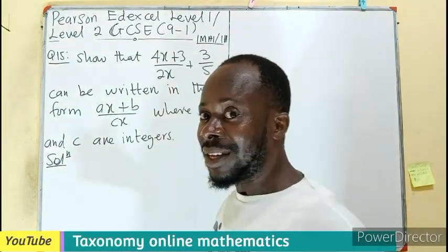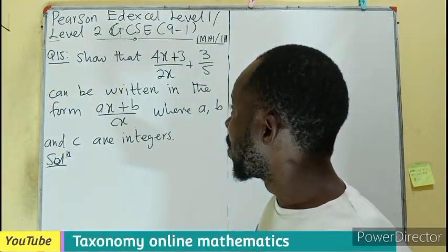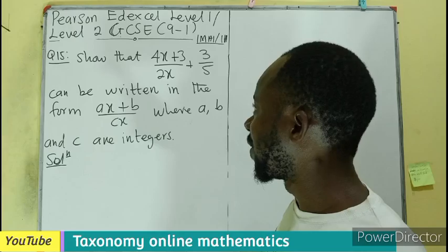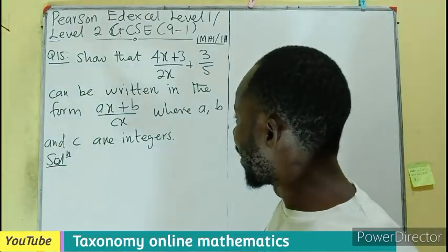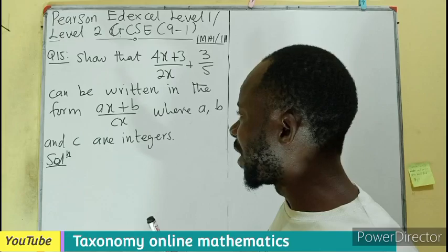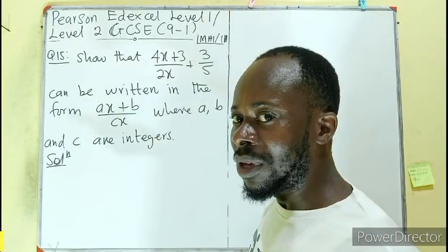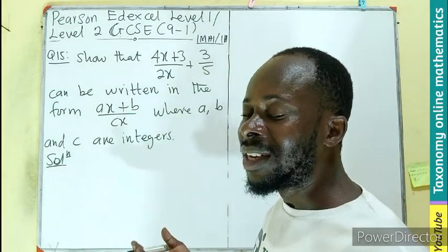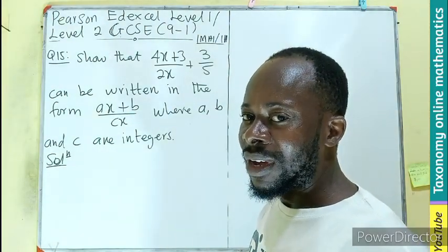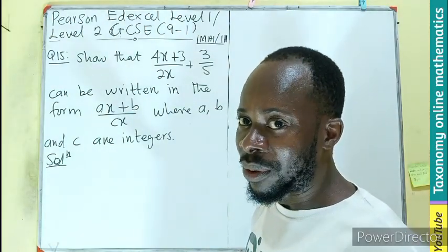Question 15 of the GCSE Edexcel question paper. We have to show that 4x plus 3 all divided by 2x, plus 3 divided by 5, can be written in the form ax plus b divided by cx, where a, b, and c are all integers. This is just the addition of fractional algebraic expressions.